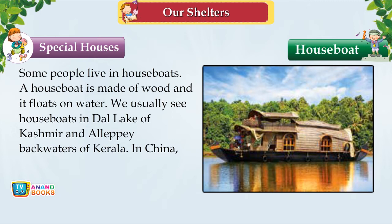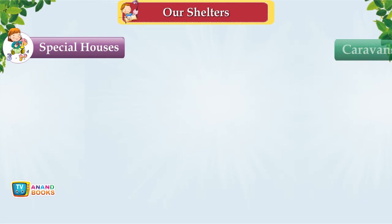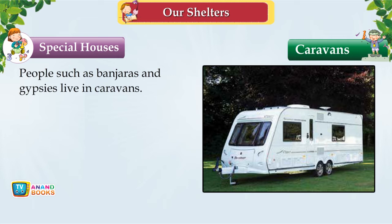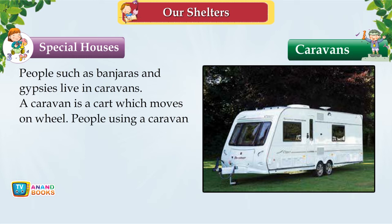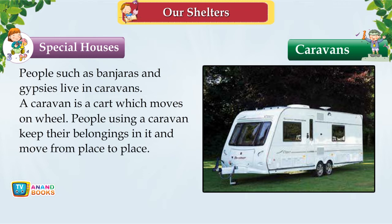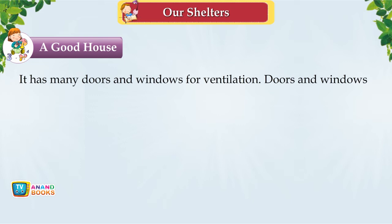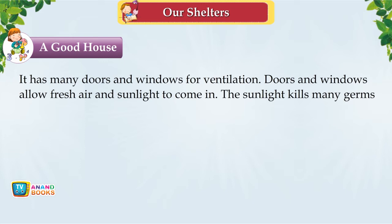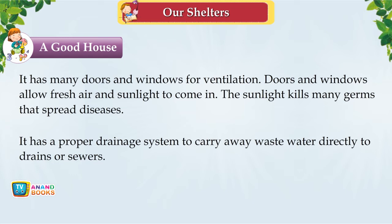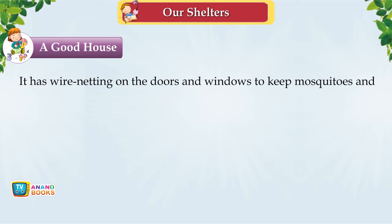Karwans — Banjaras and Gypsies live in karwans, carts that move on wheels, carrying their belongings while moving from place to place. A Good House. A house may be small or big but should be neat, clean and germ-free. A good house has many doors and windows for ventilation, allowing fresh air and sunlight to kill germs. It has a proper drainage system, wire netting to keep mosquitoes and flies away, and strong walls and roof for safety.